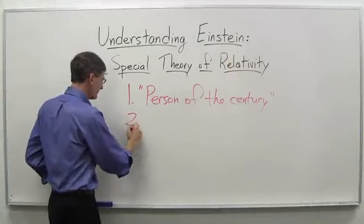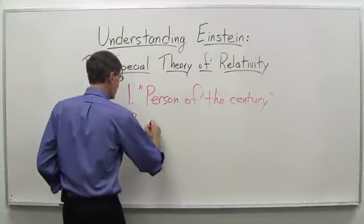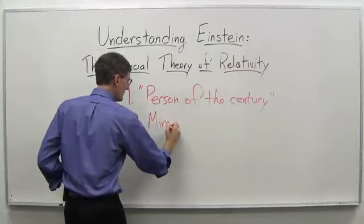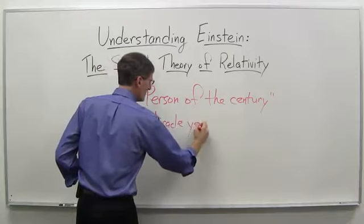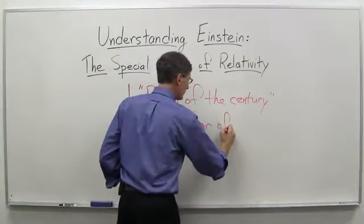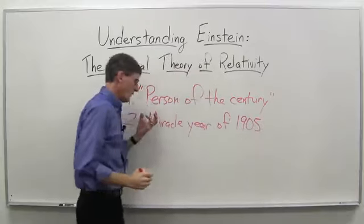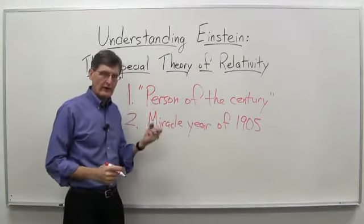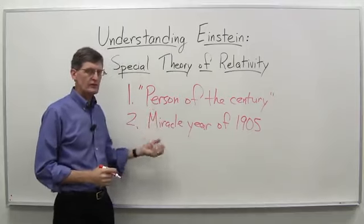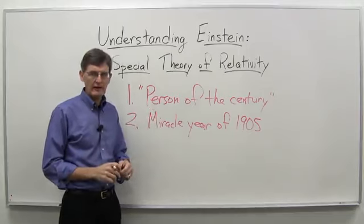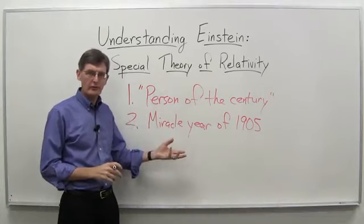Number two, we'll call this the Miracle Year of 1905. And in 1905, Einstein had maybe the greatest year any scientist has ever had. And at the time, he was only 26 years old.